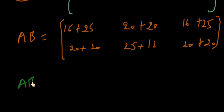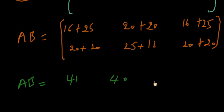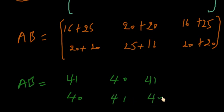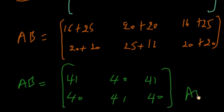So AB is equal to: the first element is 41, the second element is 40, the third element is 41, and the fourth element is 40. This is our answer after multiplication of matrices.